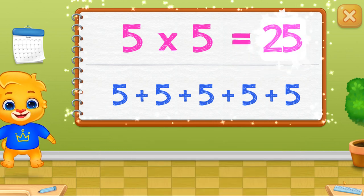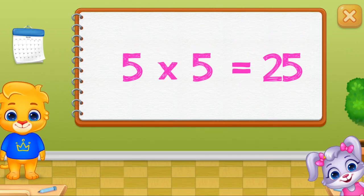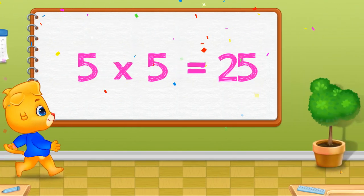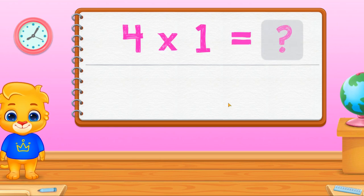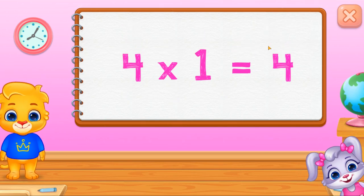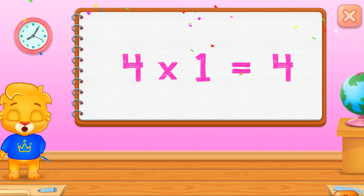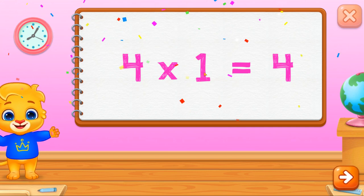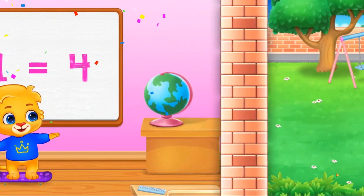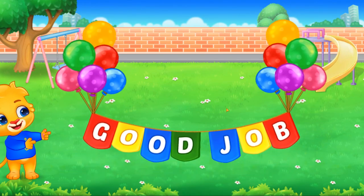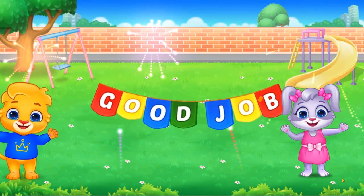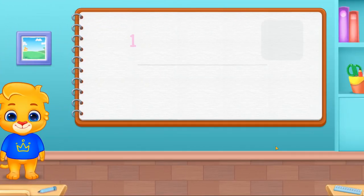Twenty-five. Five times five equals twenty-five. Three times five.